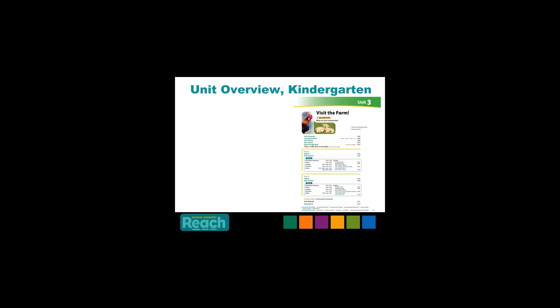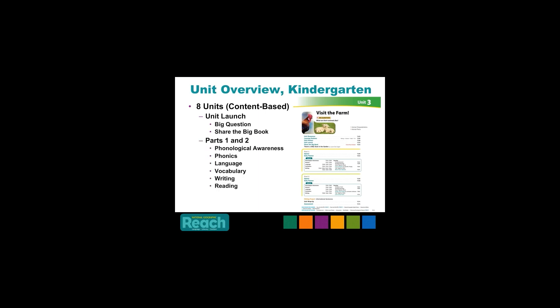The instruction at the kindergarten level is very similar. There are also eight units per level with content-based units focusing on kindergarten science or social studies content. Each unit in kindergarten follows the same instructional path: a unit launch with a big question, followed by a read-aloud with a big book to build comprehension. Instruction is then broken into two parts, both including focused instruction to develop phonological awareness and phonics, develop language and academic vocabulary, and integrate authentic reading and writing instruction. Each unit has a writing project and ends with a unit wrap-up.